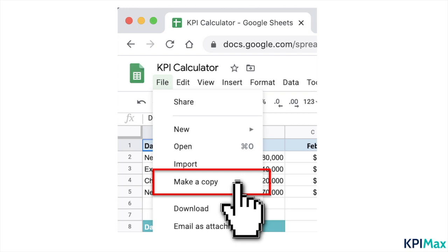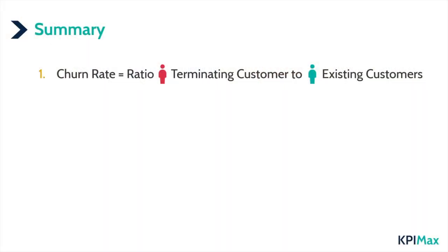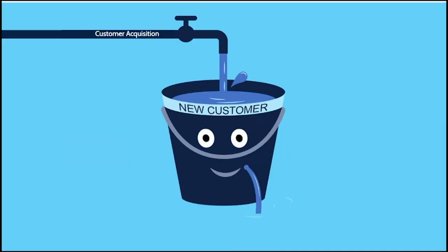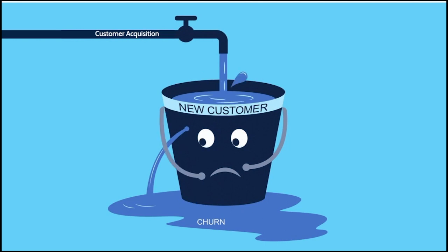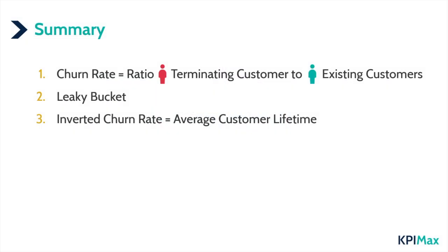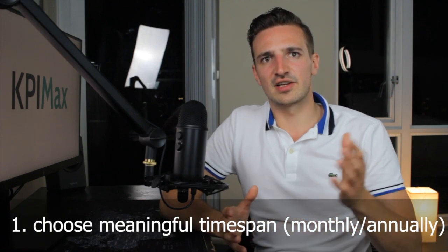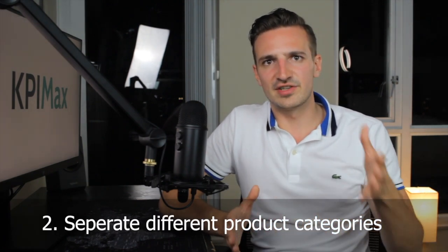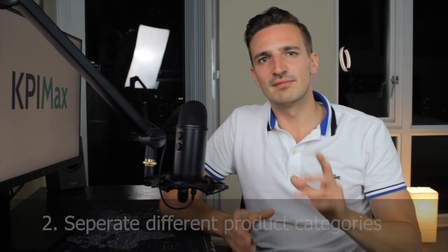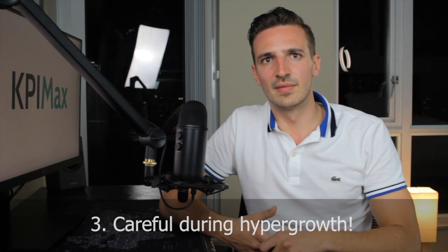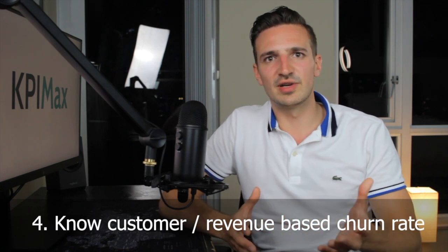To sum up: the churn rate is the ratio between customers terminating your service and your existing customers. Having high churn is like filling a leaky bucket — the bucket will never hold your revenue stream if you don't fix the leaks. With the inverted churn rate you can calculate the average customer lifetime. Don't approach churn by putting lipstick on a pig. Choose a meaningful time span such as monthly or annually, separate out different product categories like enterprise plans, be careful during times of hyper-growth, and know the difference between customer and revenue-based churn rate.